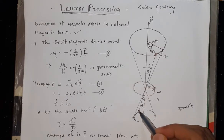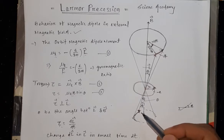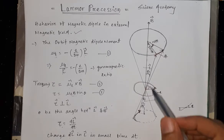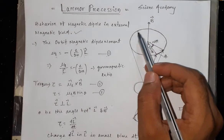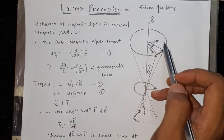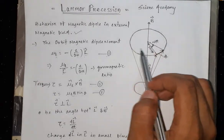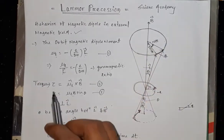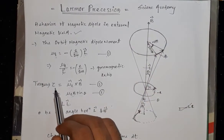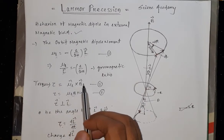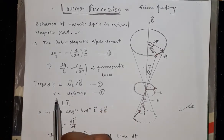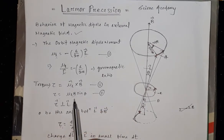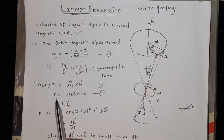Whenever a magnetic moment is created, the interaction between mu_L and the magnetic field B develops a torque. The torque tau equals mu_L cross B, and expanding this gives tau equals mu_L times B times sin theta.